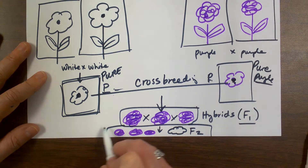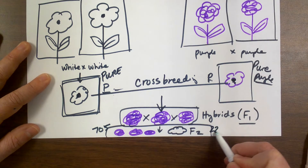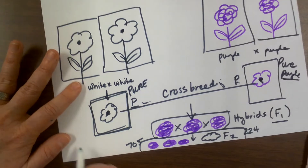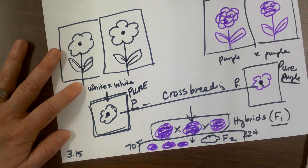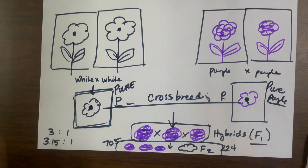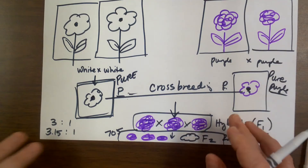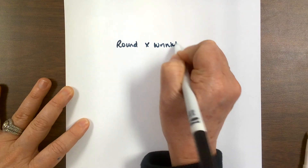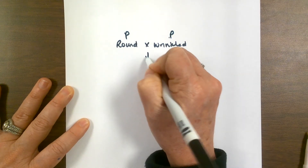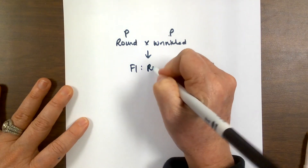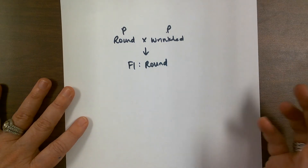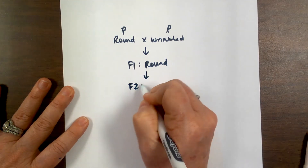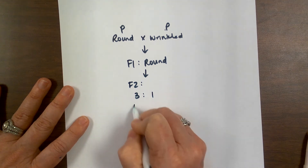That's about a 3 to 1 ratio — yellow was in a 3:1 ratio to green in the F2 generation. We now know that means yellow genes for seed color are dominant to green. In the flower color experiment, he counted 705 purple and 224 white, giving a 3.15 to 1 ratio — almost exactly 3:1. He also did round seeds versus wrinkled seeds: the F1 generation was all round, so round is dominant and wrinkled is recessive, and the F2 generation gave a 3:1 ratio of round to wrinkled.